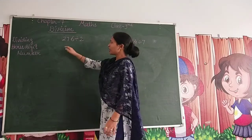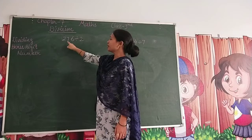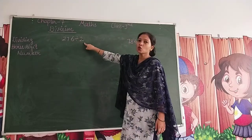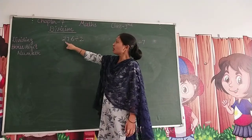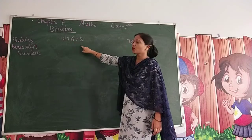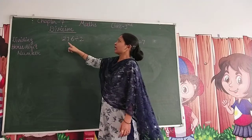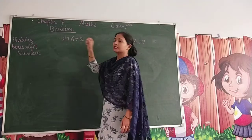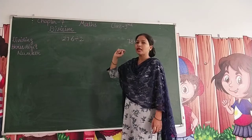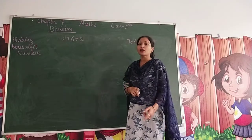Let's start. The first question is 276 divided by 2. So what are we going to do? We have a 3-digit number being divided.